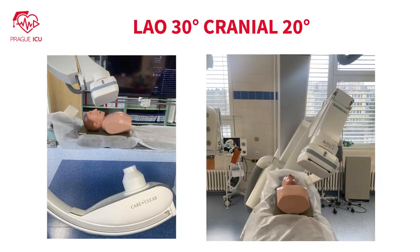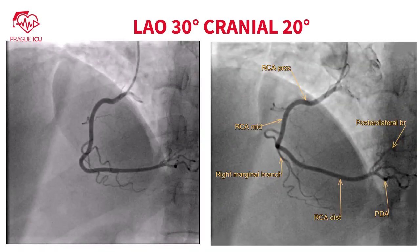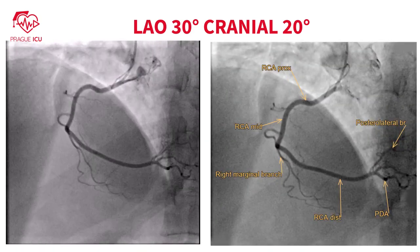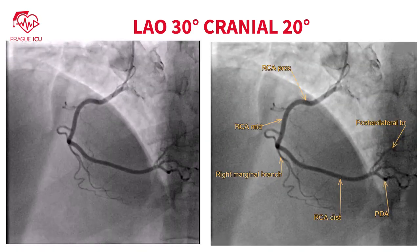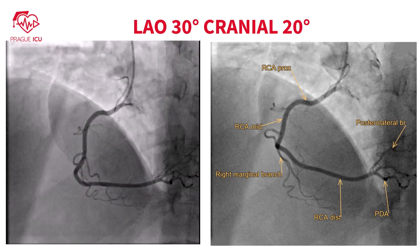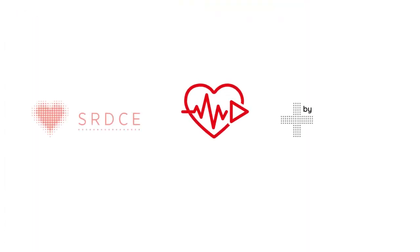Left anterior oblique 30 degrees cranial 20 degrees view is similar to the AP cranial view, but the distal bifurcation may be seen more clearly. And this is all for now. Thank you for watching Prague ICU and stay tuned for next educational videos.